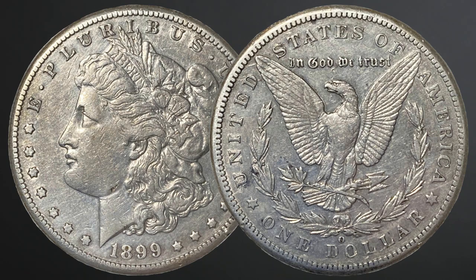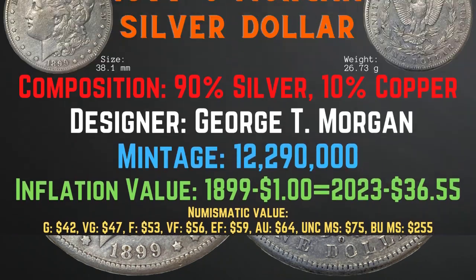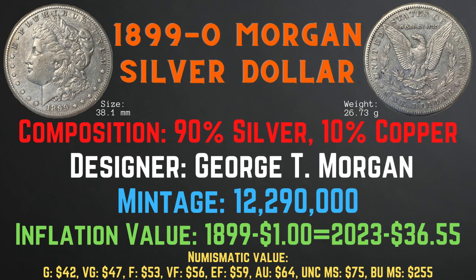Now let's take a look at the 1899-O Morgan silver dollar. It was minted in New Orleans and has a size of 38.1 millimeters and a weight of 26.73 grams. Its composition is 90% silver and 10% copper. Its designer is George T. Morgan. Its mintage is 12,290,000. Its inflationary value for the year 1899 is $36.55. Its numismatic value ranges from $42 in good condition to $255 in brilliant uncirculated mint state condition.